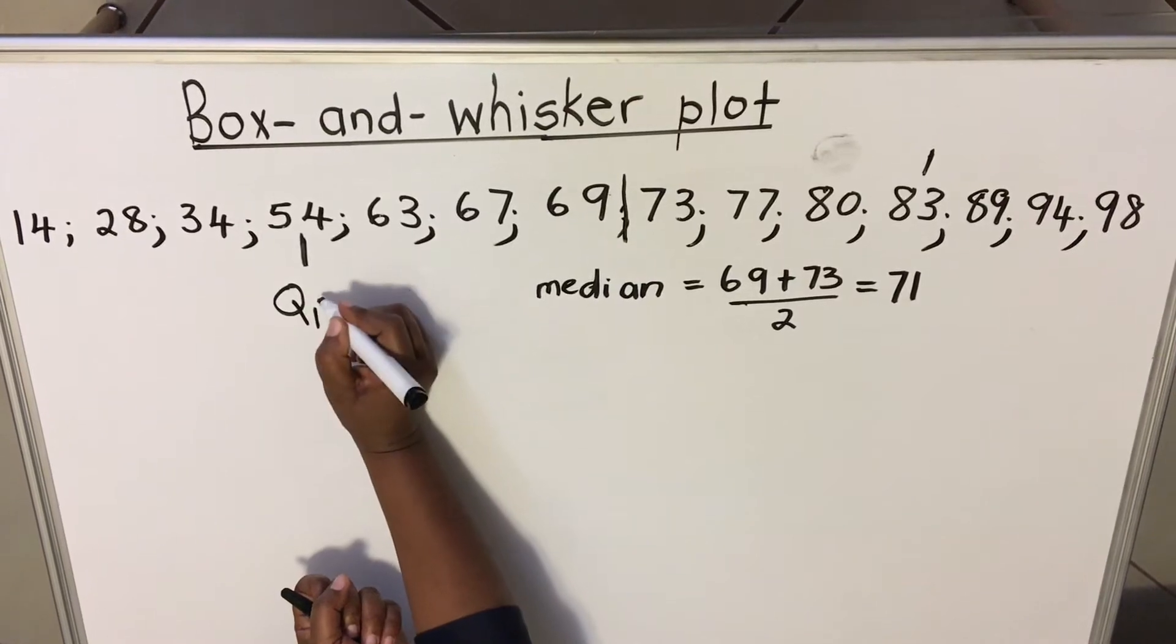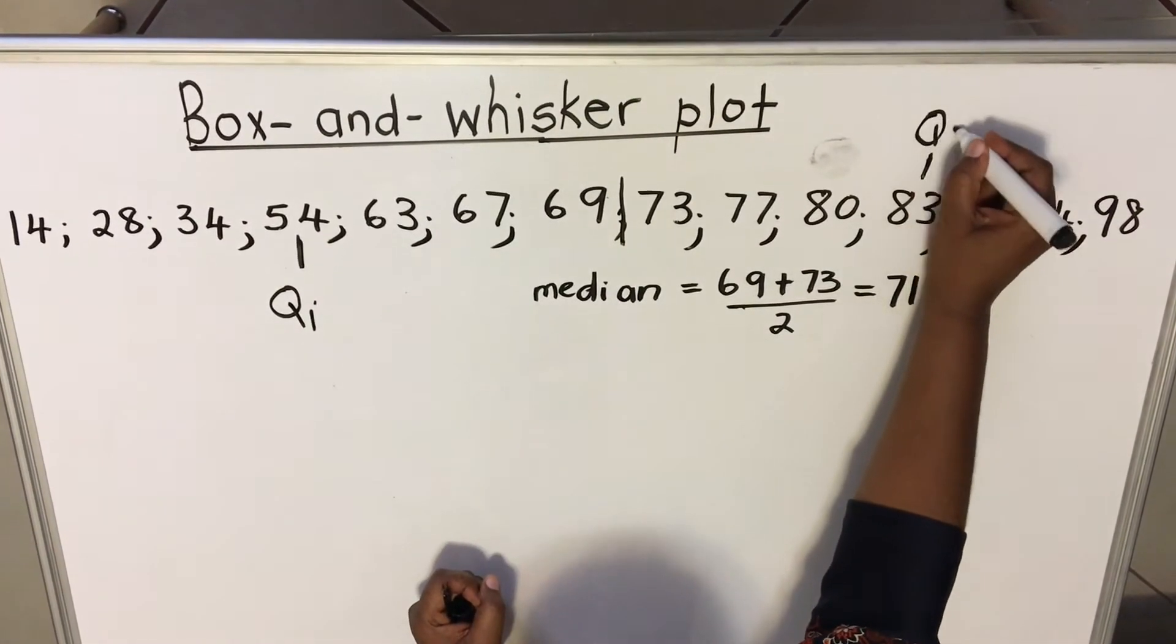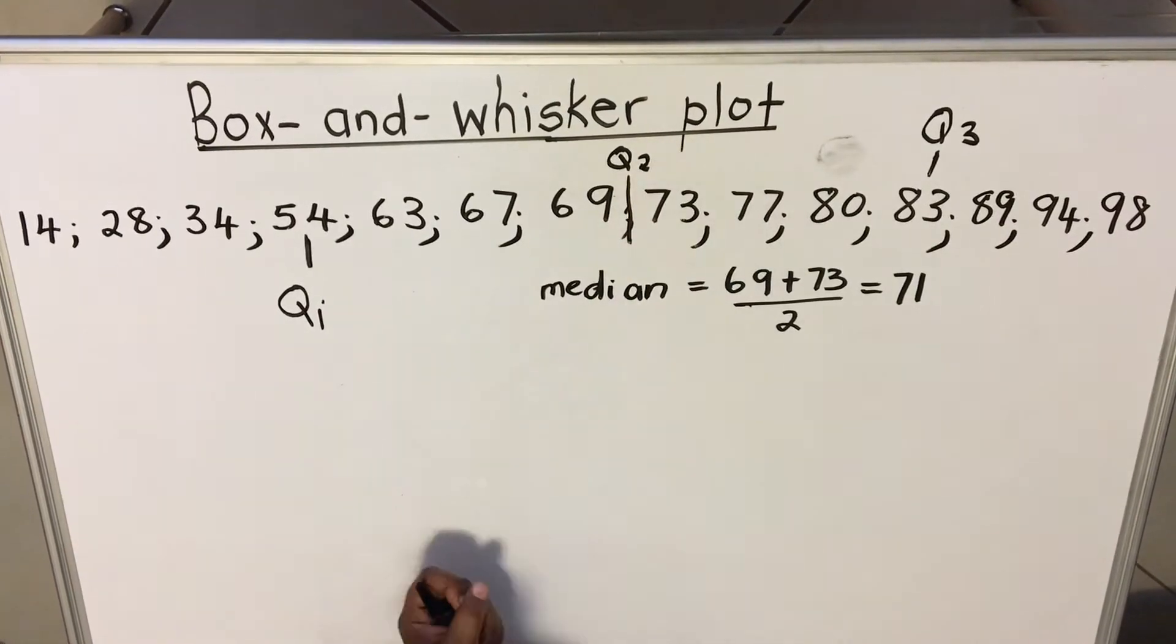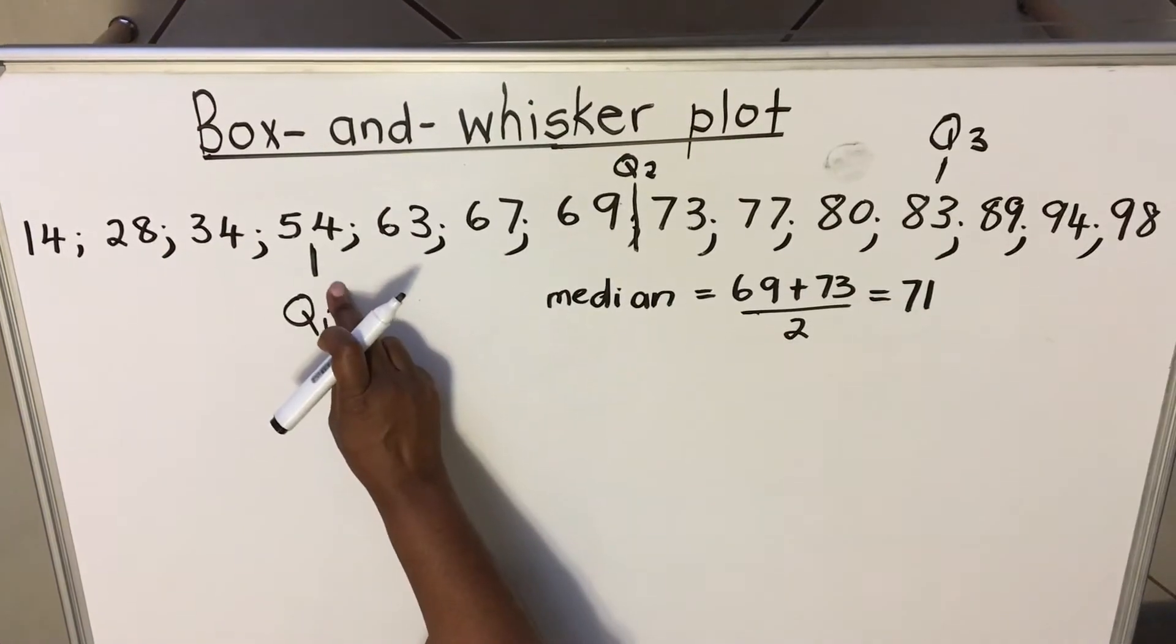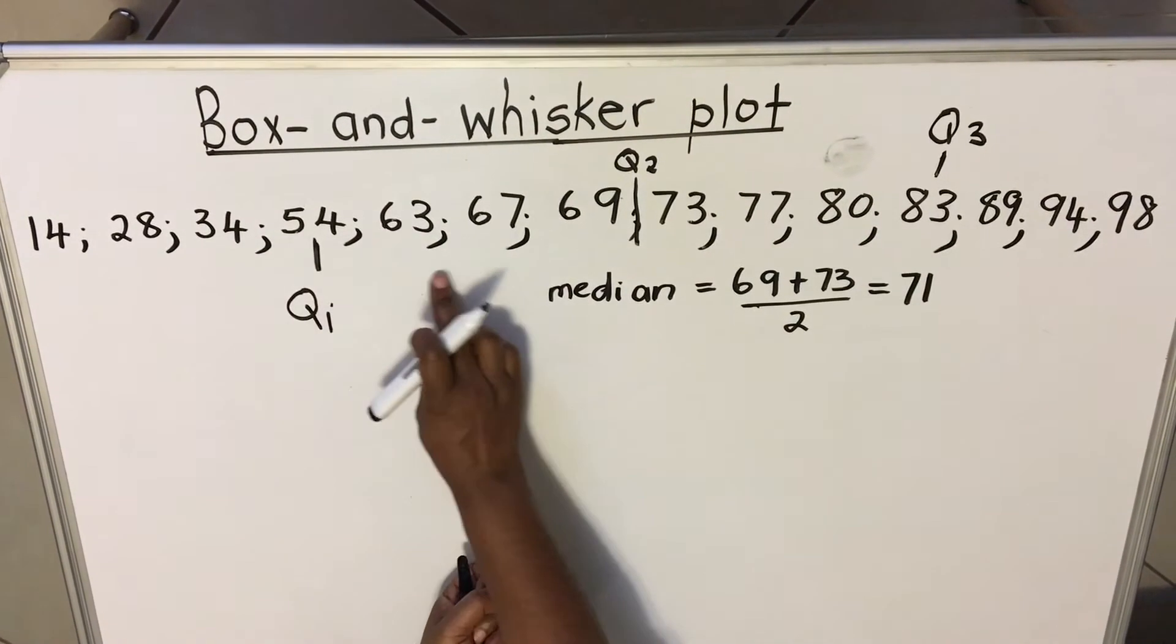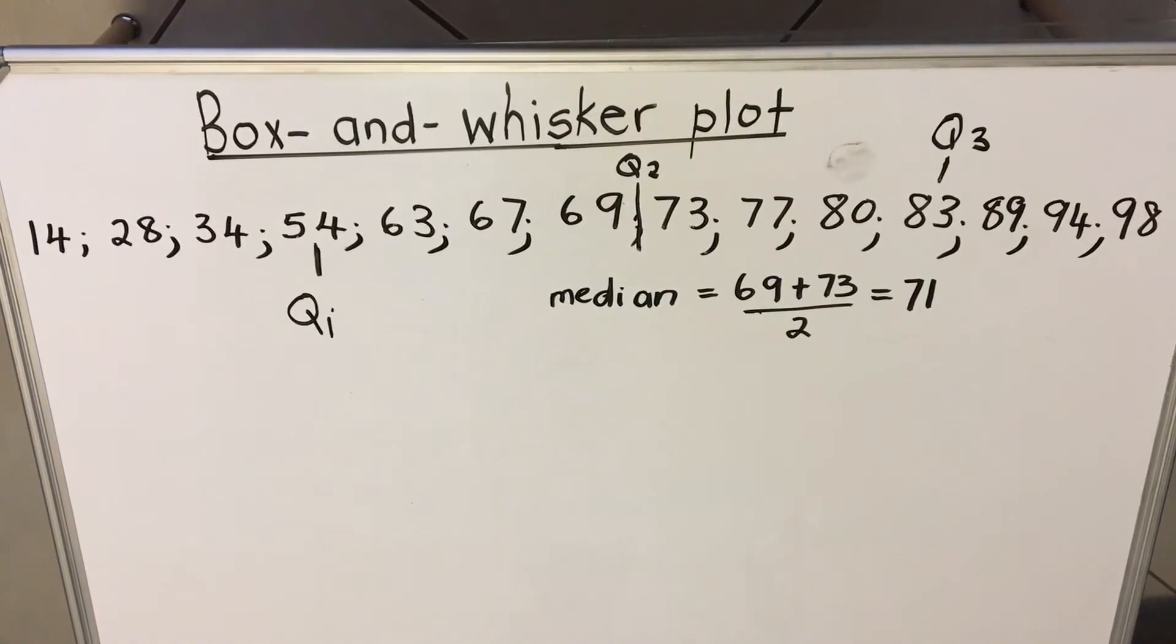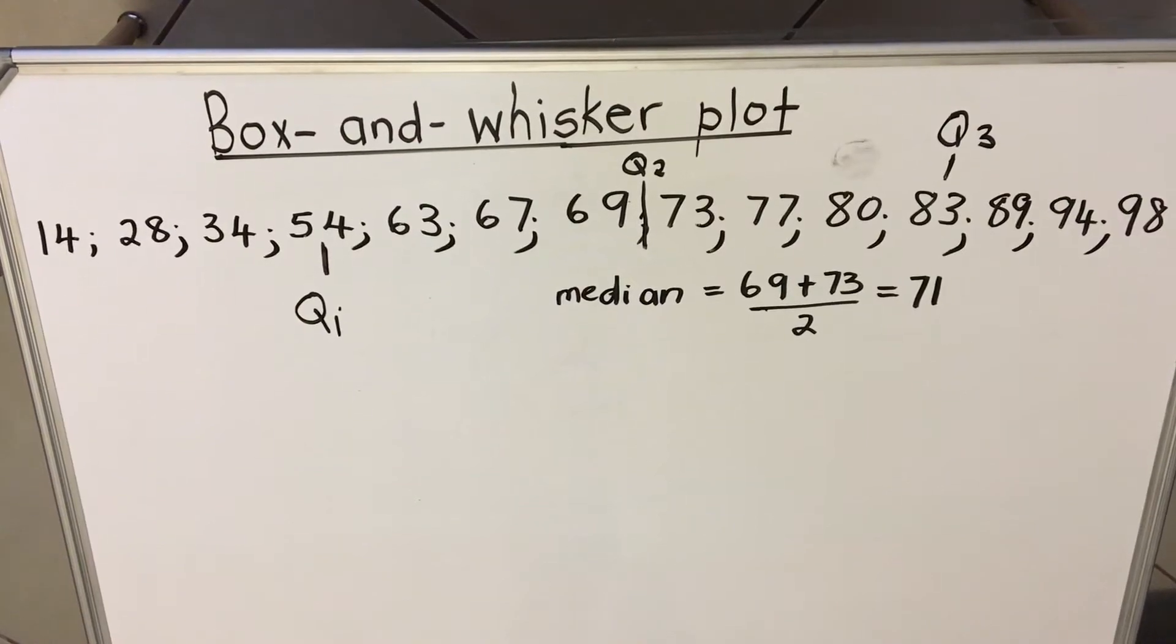So you have three, three, three, three. This will be your Q1 or your lower quartile. This will be your Q3 or your upper quartile. You can see that your median is also your Q2, your middle quartile. So each quarter has three data, has three values.